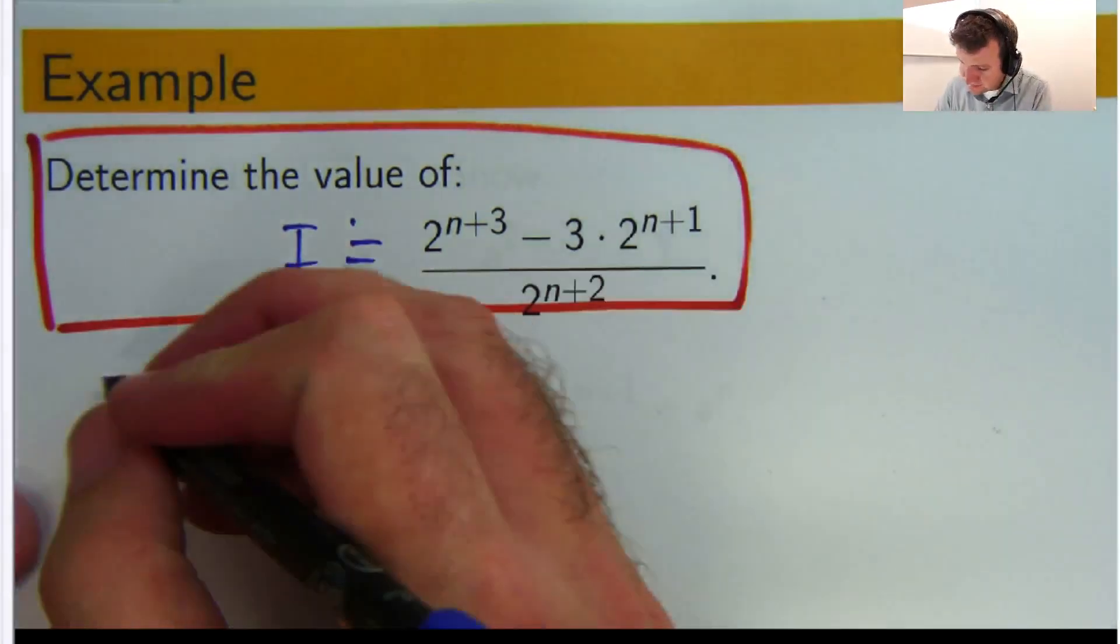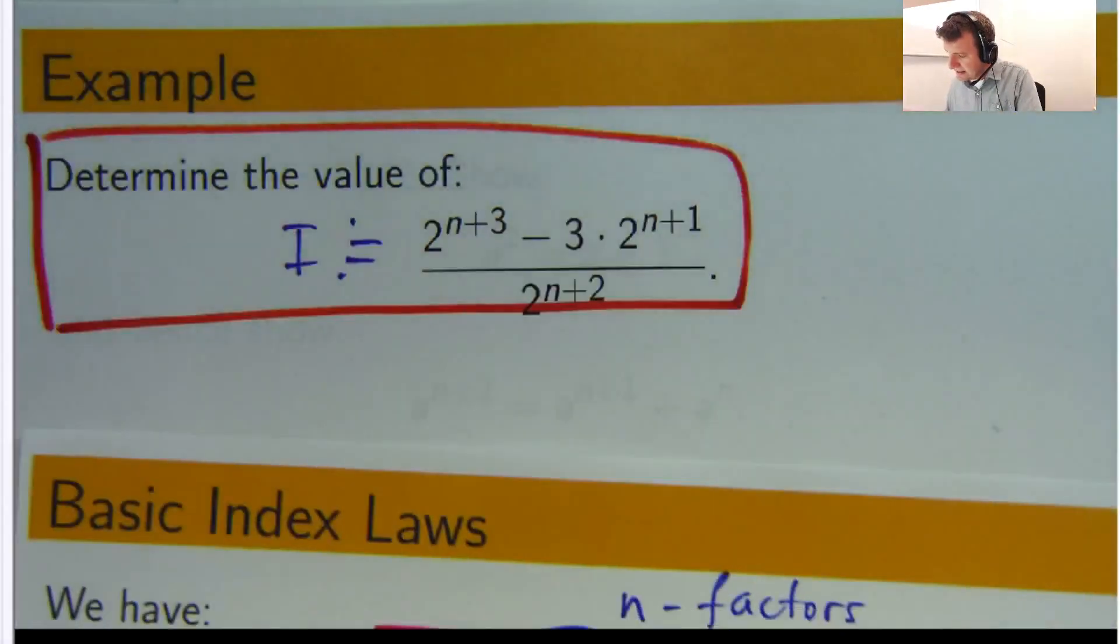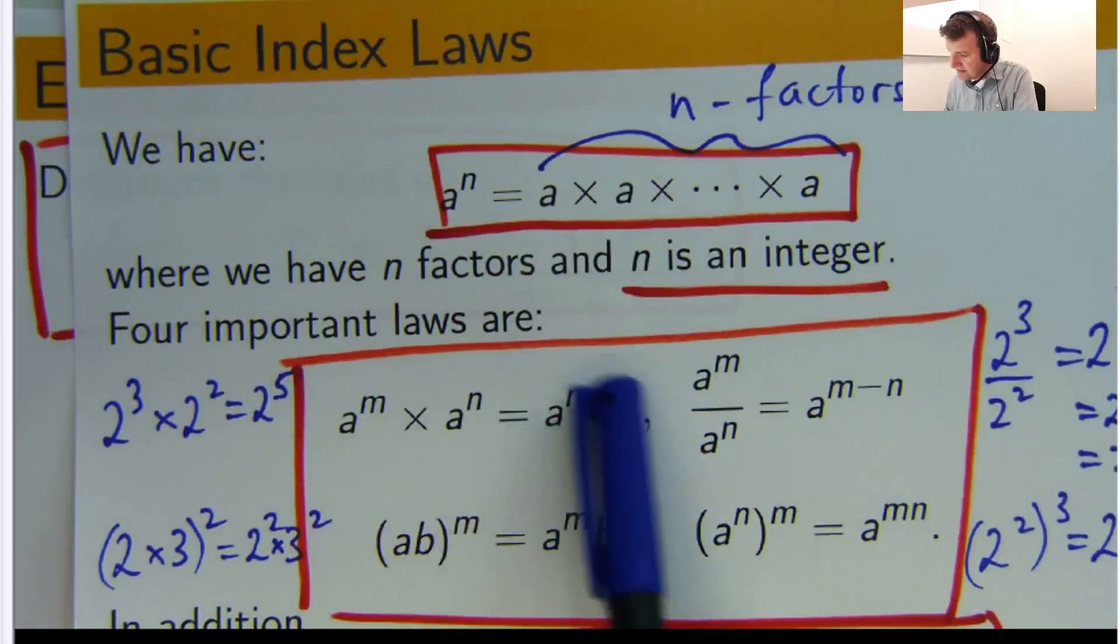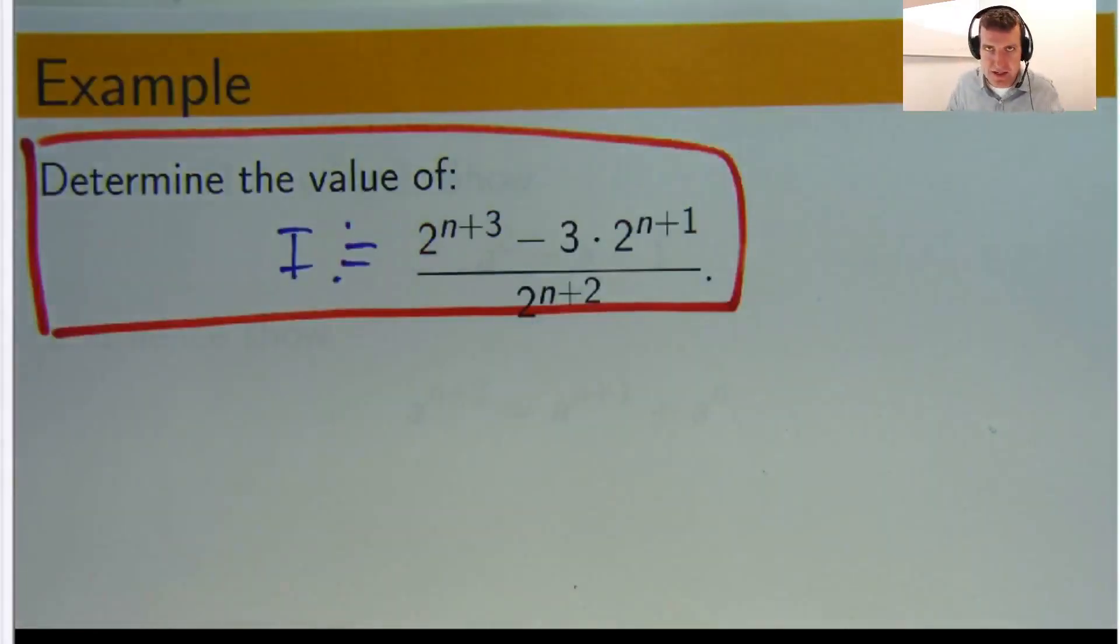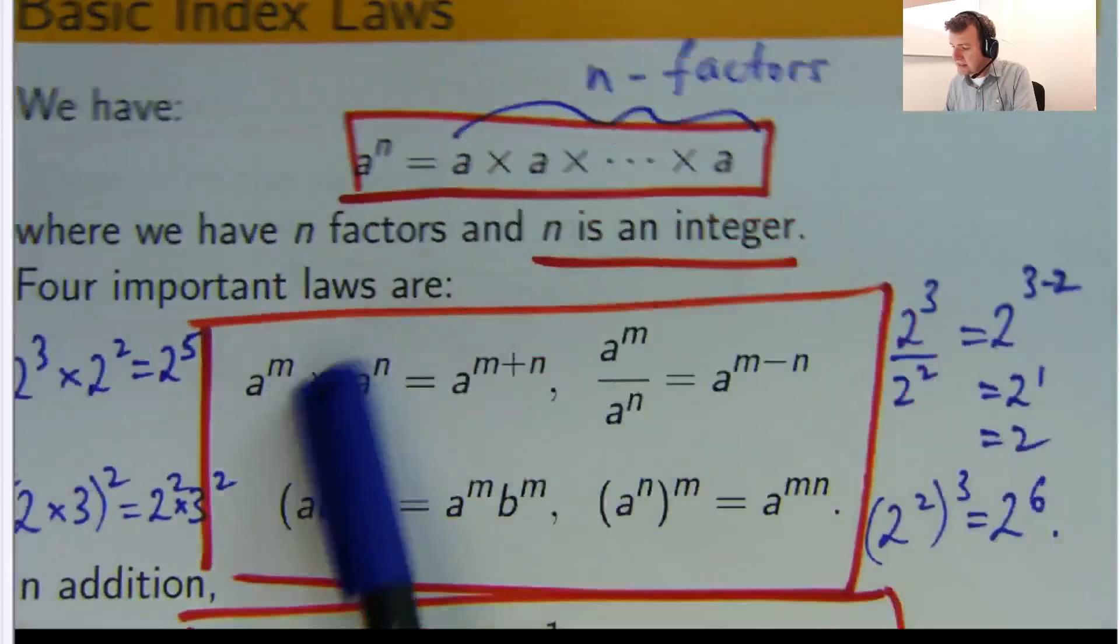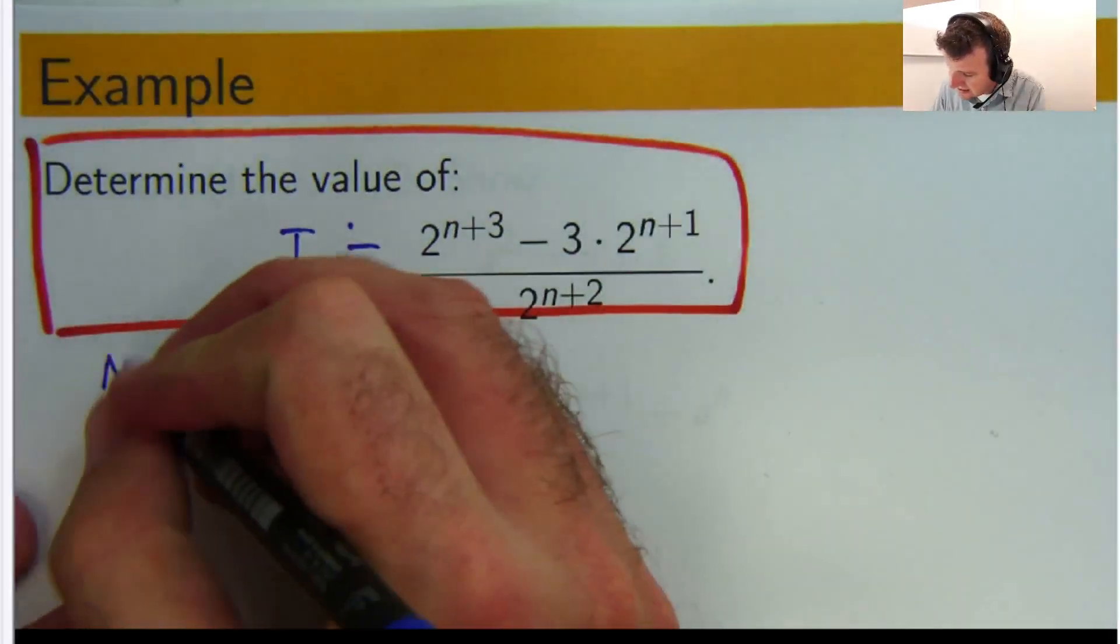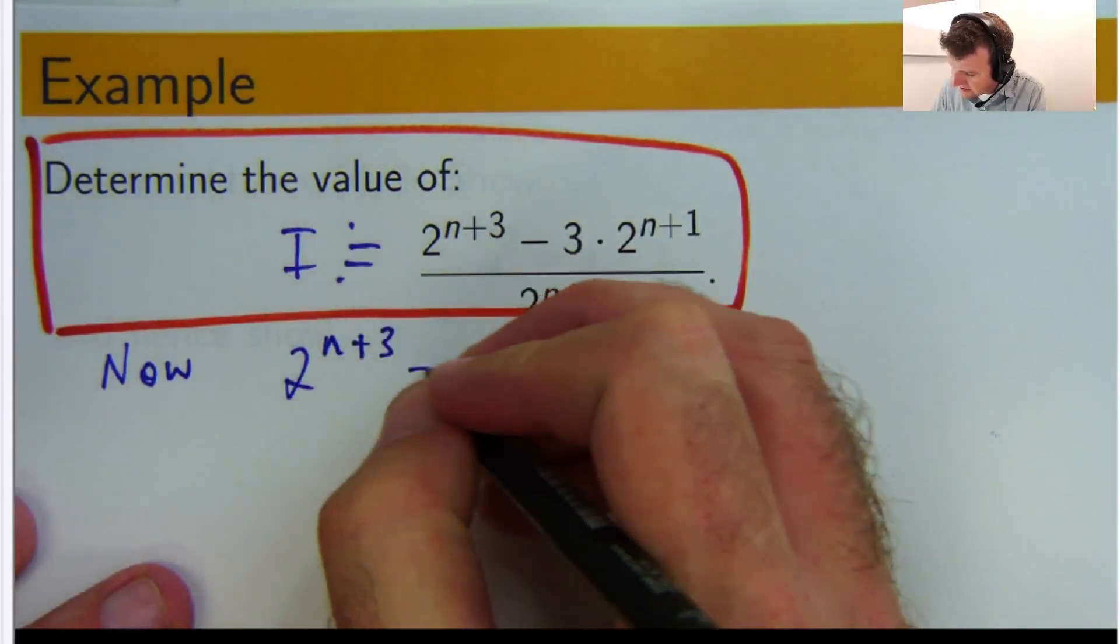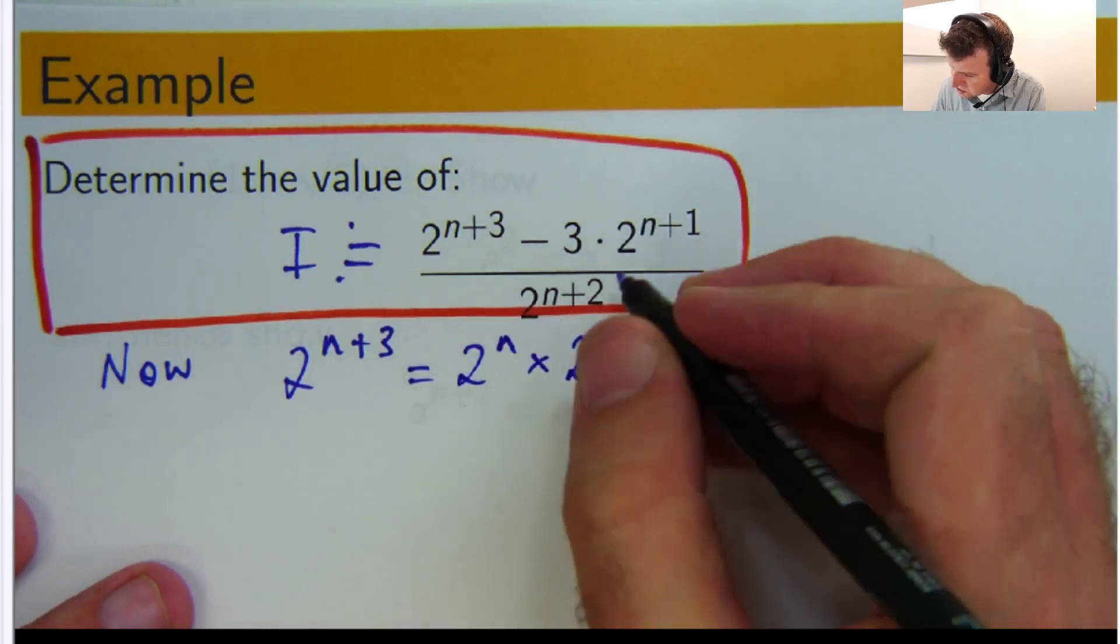Okay, so we can use this expression here, for this one, a equals 2, and m plus n equals n plus 3, and unpack that. So we can go from here to here. All right, so let me just write that out. It's 2 to the n times 2 to the 3.